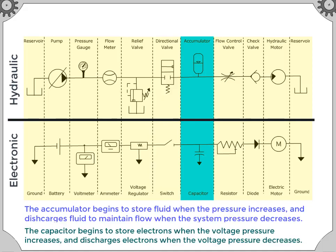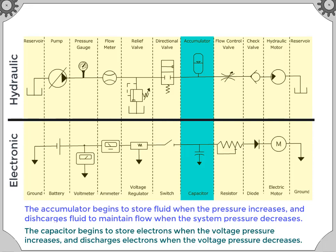The accumulator begins to store fluid when the pressure increases and discharges the fluid to maintain flow when the system pressure decreases. The capacitor begins to store electrons when the voltage pressure increases and discharges electrons when the voltage pressure decreases.